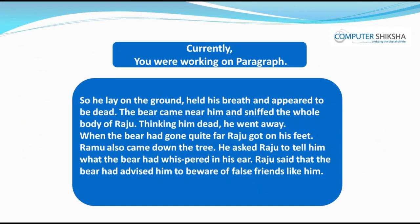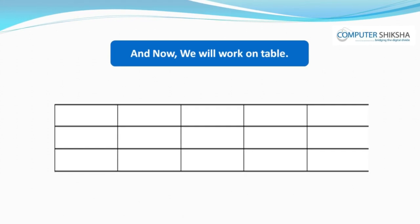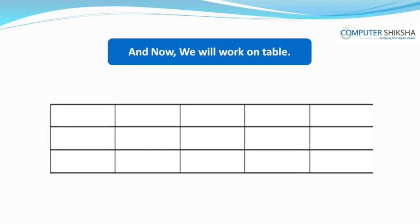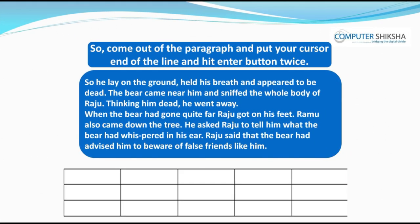You were working on paragraph. Now we will learn to work on a table. For that, you need to come out of the paragraph. Take your cursor after the last word of the paragraph. Then press Enter 2-3 times and you will be at the desired position.